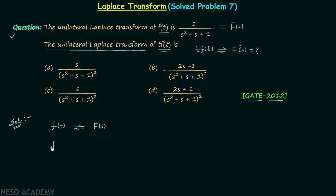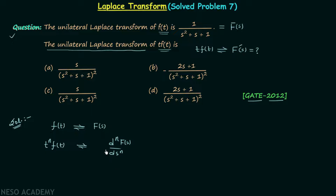If you multiply the time domain signal f(t) by t raised to power n, then the new Laplace transform will be equal to the n-th derivative of F(s) with respect to s, multiplied by (−1)^n.